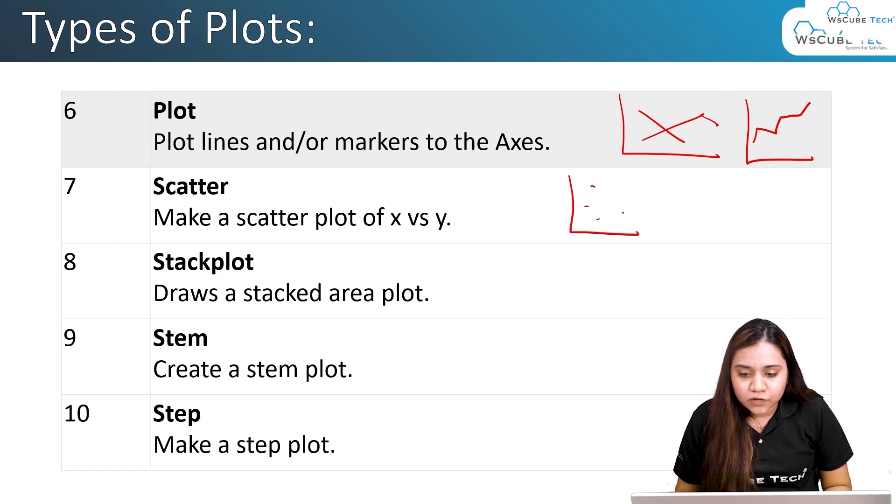Then we have a scatter plot. A scatter plot looks like this—the data is scattered over here. Then we have stack plot which has different lines in it.